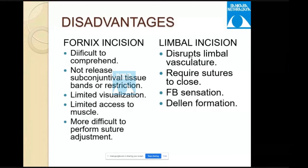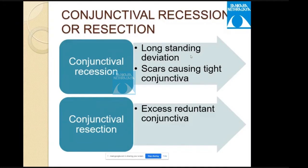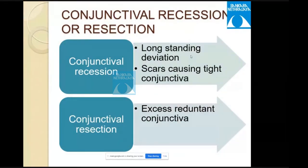Disadvantages of fornix incision: difficult to comprehend, cannot release subconjunctival tissue bands or restrictions, limited visualization and access to muscle, and more difficult to perform suture adjustment. Disadvantages of limbal incision: disrupts limbal vasculature, requires sutures to close, more foreign body sensation, and dellen formation. In long-standing deviation with tight conjunctiva, conjunctival recession is done before closure; if there is excess conjunctiva, conjunctival resection is done.